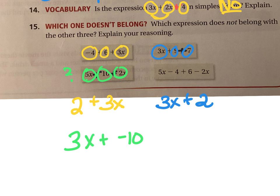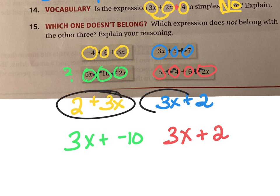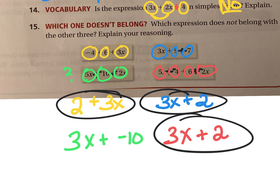Let's figure the last one: 5x, instead of minus 4 I'll plus a negative 4, plus 6, and instead of minus, plus a negative 2x. My terms are 5x, negative 4, 6, and negative 2x. Putting the x's together: 5x plus negative 2x gives me 3x. And negative 4 plus positive 6 gives me positive 2. These three simplify to the same thing — this one does not.